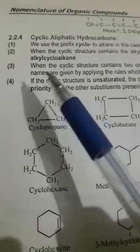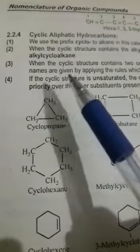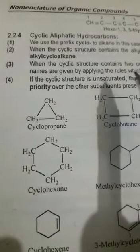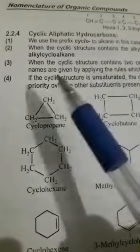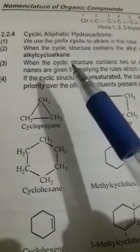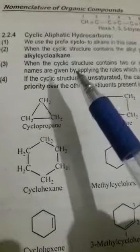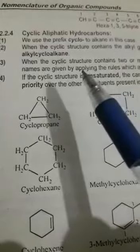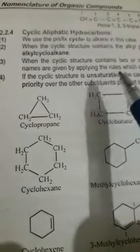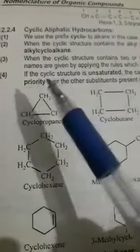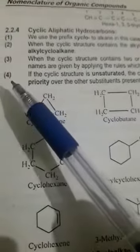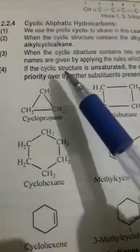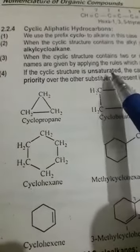Rule number three: when the cyclic structure contains two or more substituents، then their names and positions are given by applying the rules which are applied in case of alkanes۔ اگر دو یا دو سے زیادہ substituents present ہوں تو ان کی naming کے لئے وہی rules apply کریں گے جو alkanes کے case میں کیے گئے ہیں۔